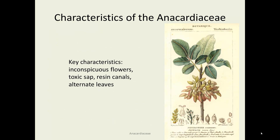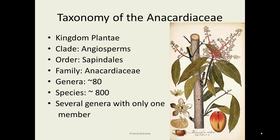Revisiting characteristics: inconspicuous flowers, alternate leaf branching style, and toxic sap occurring in resin canals — sometimes in the pith, sometimes not. On the right, you can see an old-time drawing of pistachio.